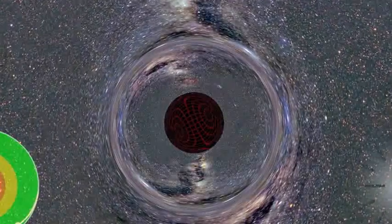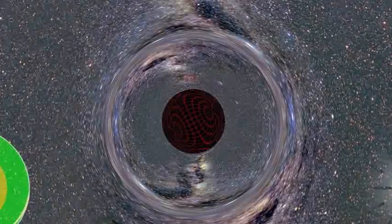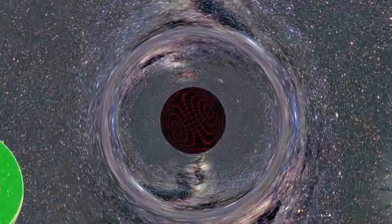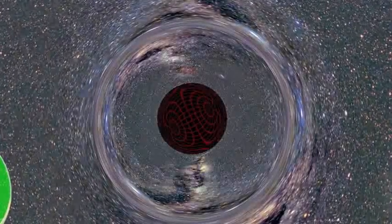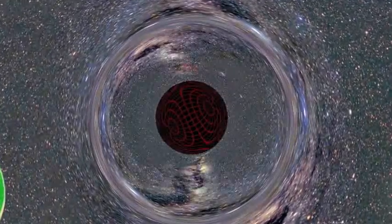Notice that we can see both the north and the south poles of the black hole simultaneously. Since the black hole bends light around it, we can see all around and into the back of the black hole at the same time we see the front. This horizon is called the Schwarzschild radius.